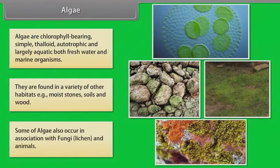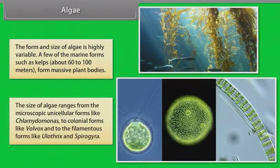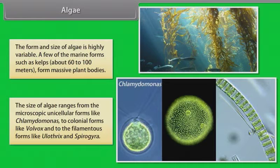Some of algae also occur in association with fungi, lichen, and animals. The form and size of algae is highly variable. A few of the marine forms such as kelps, about 60 to 100 meters, form massive plant bodies. The size of algae ranges from microscopic unicellular forms like Chlamydomonas to colonial forms like Volvox and to the filamentous forms like Ulothrix and Spirogyra.